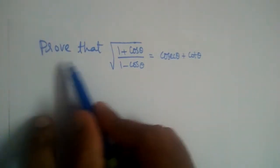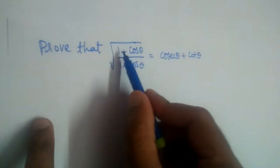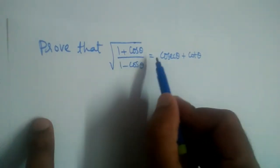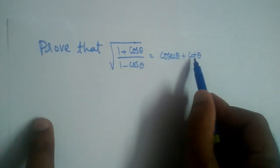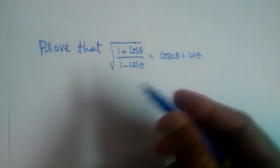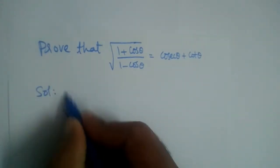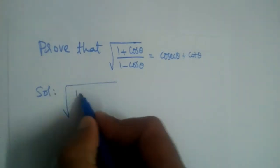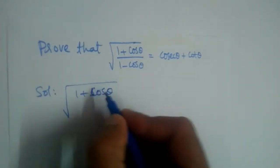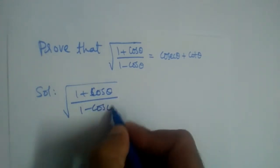We have a problem here. Prove that root of 1 plus cos divided by 1 minus cos is equal to cosecant plus cot. So let us solve this problem. 1 plus cos divided by 1 minus cos.